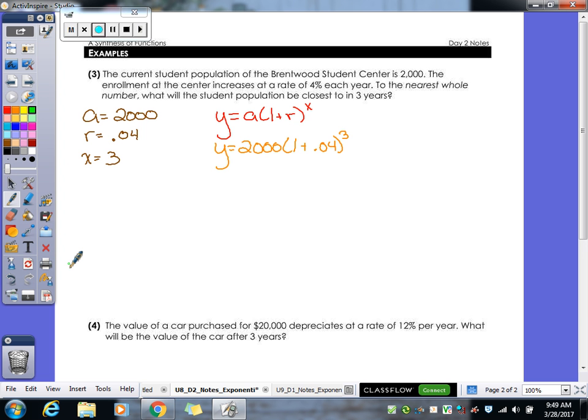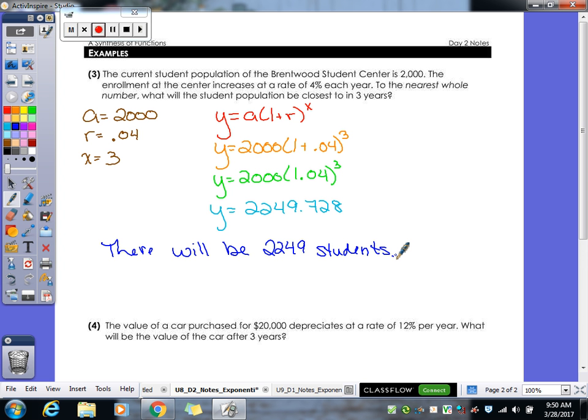Again, we'll add the stuff in our parentheses first, which would give us a 1.04 inside of our parentheses. And then go ahead and type it in. 2,000 parentheses 1.04 to the third. So this was a population increase. So what would I actually round it to? 2,249. So there will be 2,249 students.